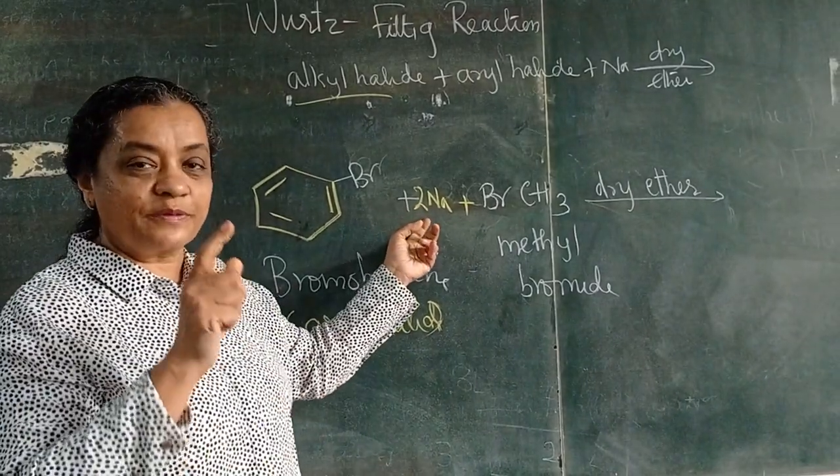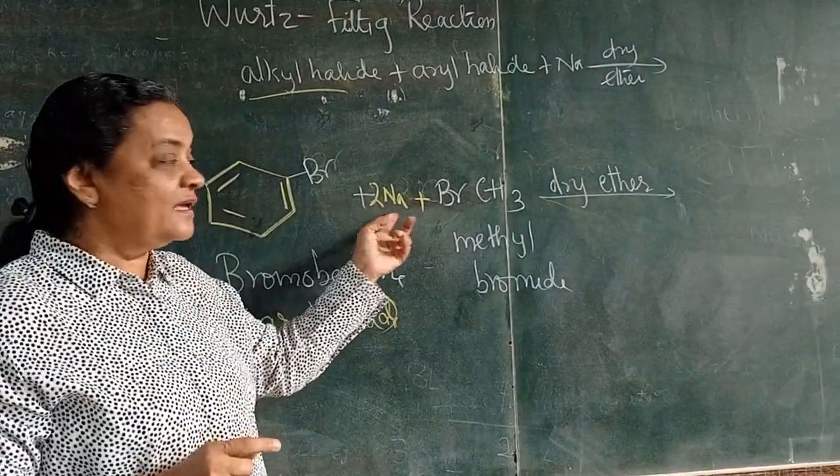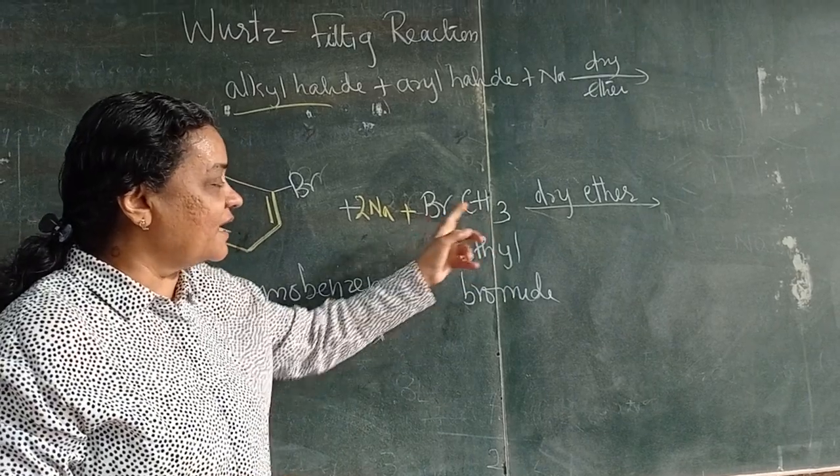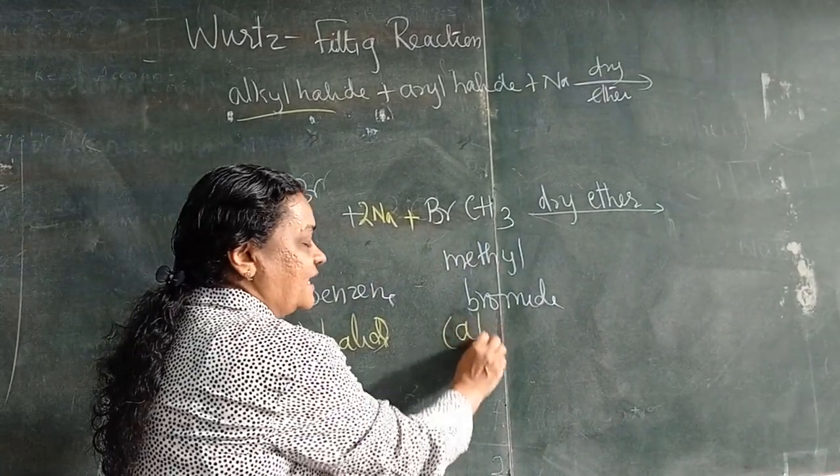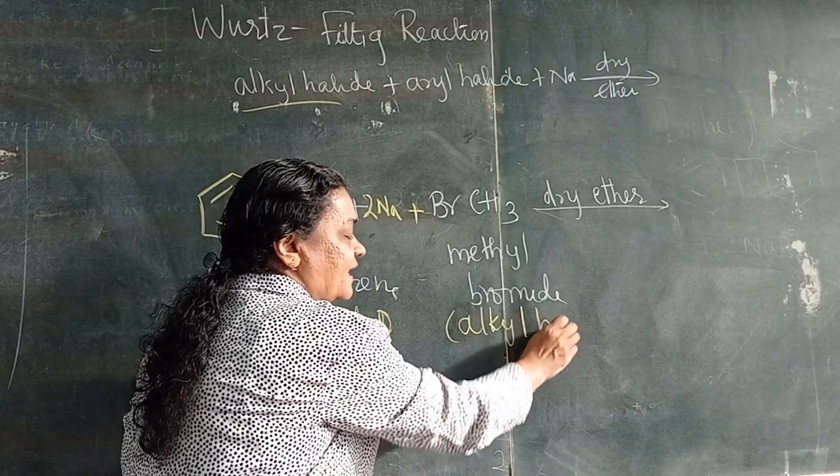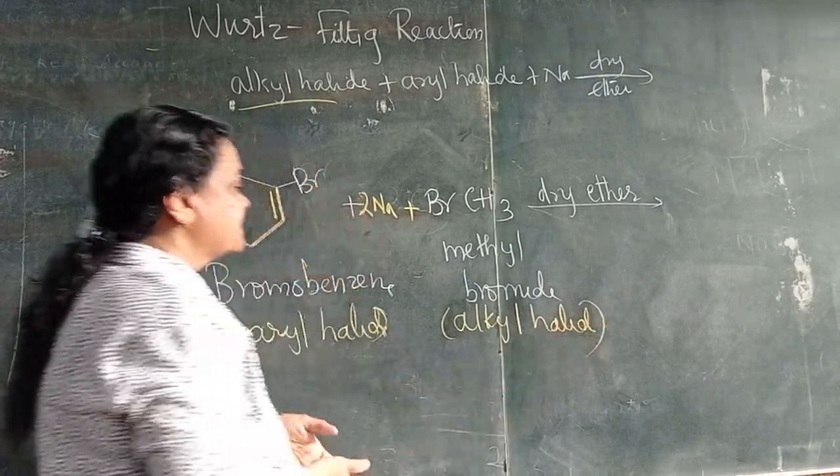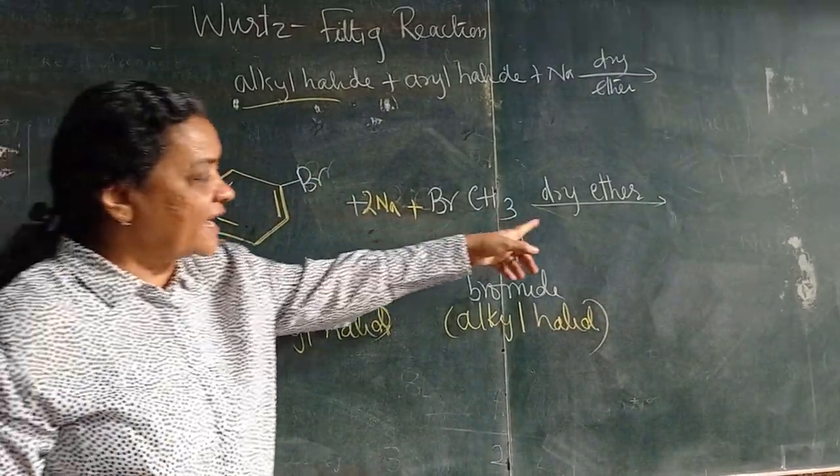Sodium ko yaha pe liya hai. Wurtz-Fittig kya hogi? And methyl bromide, yaha alkyl halide. So you have an alkyl halide and an aryl halide in presence of sodium and dry ether.